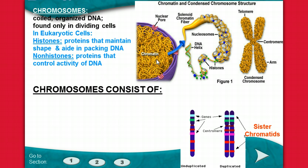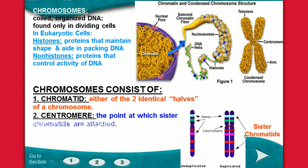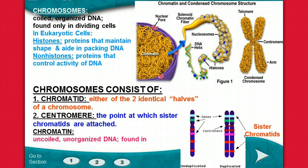Looking specifically at the structure of a chromosome, chromosomes consist of two basic parts: the chromatid, which is either of the two identical halves of the chromosome, and the centromere, the point at which the sister chromatids are actually attached. Chromatin is the uncoiled, unorganized DNA found in non-dividing cells — that's our definition for chromatin.